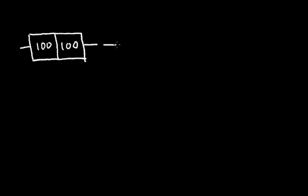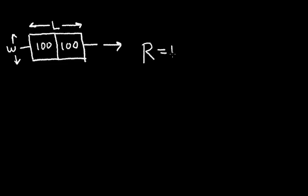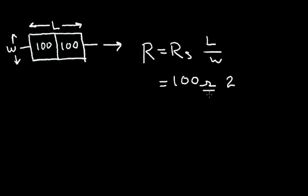This is 100 ohms and 100 ohms, with a resistor terminal at each end, so the current is flowing in this direction. The length of the resistor is this dimension and the width W is this dimension. Resistance equals the sheet resistance times the length divided by the width. The sheet resistance is 100 ohms per square and my length is twice the width — I have two squares. The squares cancel and I have 200 ohms for the resistor.